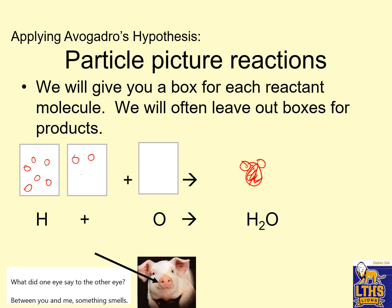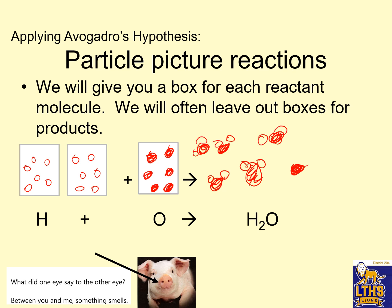We put six hydrogen particles in one box and six oxygen particles in the other box. Because these are the same volume, we have to have the same number of particles — that's Avogadro's hypothesis. So how many waters do we get? We get six water molecules. Same number of particles, same volume — that's Avogadro's hypothesis in action.